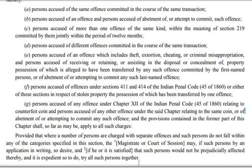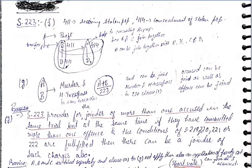So if A, B, and C are all being tried separately on separate charges and none of the conditions from Clause A to G are fulfilled, the court will not normally join the trial. But if they all file an application together and the court finds that their interests would not be adversely affected, then the court can join the trial and convert it into a single trial. So that's all for this section — focus on the bare act and focus on the sections on the topic of charge. Thank you for watching this lecture.